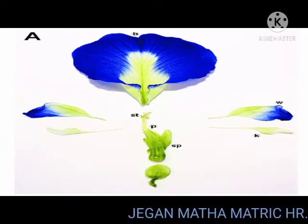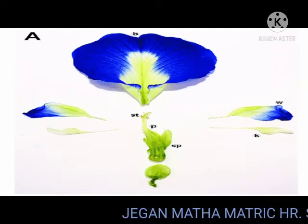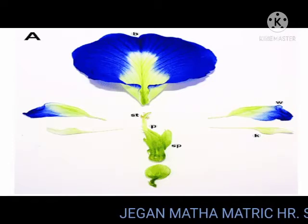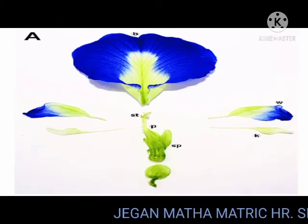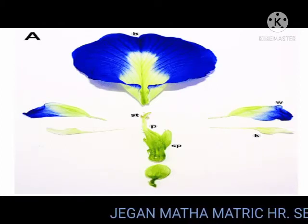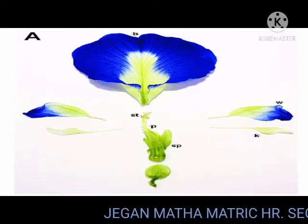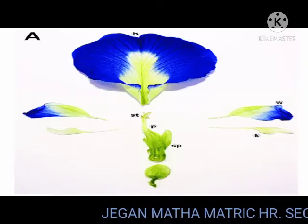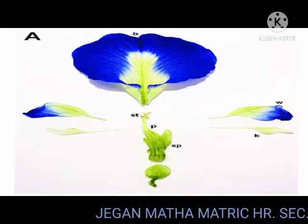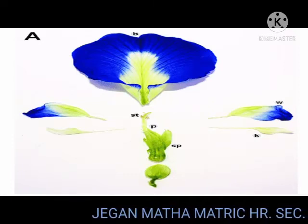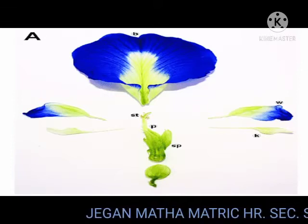Flower: the flower is said to be bracteate, bracteolate — bracteoles are usually large — pedicellate, heterochlamydeous, complete, bisexual, pentamerous, zygomorphic, and hypogynous. Heterochlamydeous means the flower has distinct calyx and corolla — we can easily separate calyx and corolla by their color.